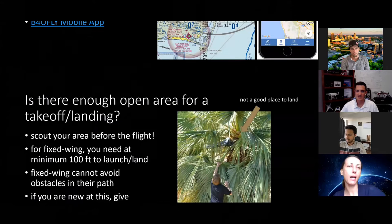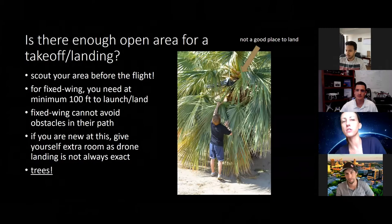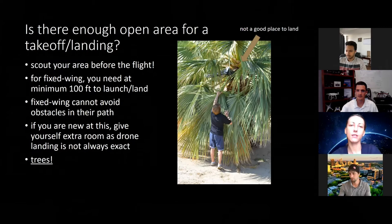Some of the other things we always think about is what kind of drone am I flying? If I'm flying a fixed wing — one that looks like an airplane — we have different considerations than if we're flying a DJI Phantom or Mavic. We always want to think about what kind of obstacles might we come across. Will I have enough room to take off and land? Am I experienced enough with takeoffs and landings? Do I have enough room to see what I want to see?